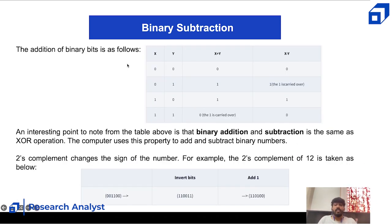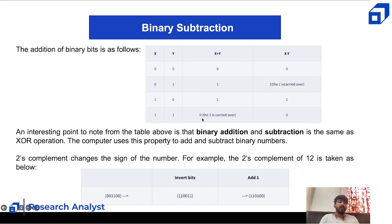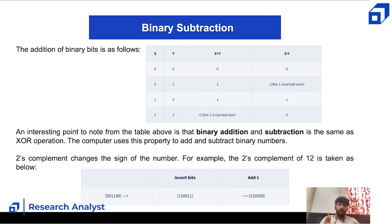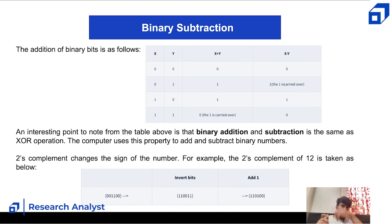The addition of binary bits follows this table: 0+0=0, 0+1=1, 1+0=1, and 1+1=0 with a carry of 1. For subtraction, 0-0=0, 0-1=1 with borrow, 1-0=1, and 1-1=0. An interesting point is that binary addition and subtraction is the same as the XOR operation, and computers use this property to perform binary arithmetic.